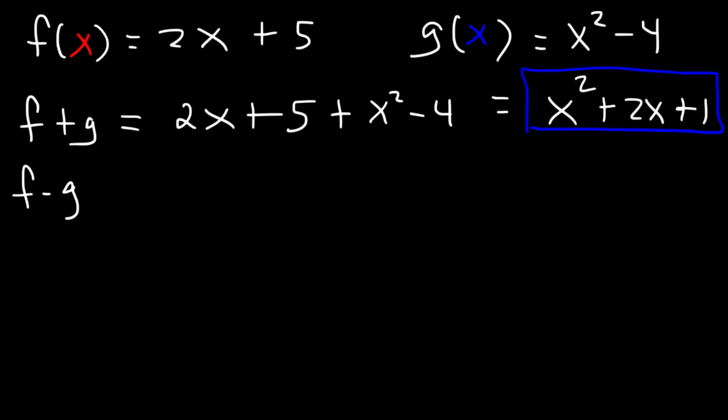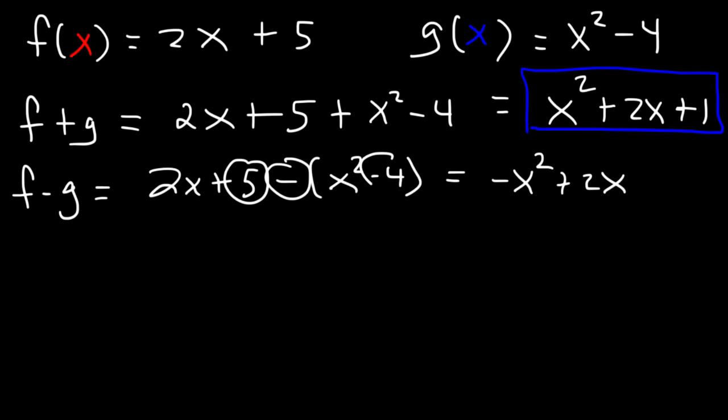Now what about f minus g? f is 2x plus 5 and then it's gonna be minus x squared minus 4. So this is gonna be negative x squared plus 2x and then we have 5 minus negative 4. 5 minus negative 4 is like 5 plus 4 which is 9. So that's equal to f minus g.